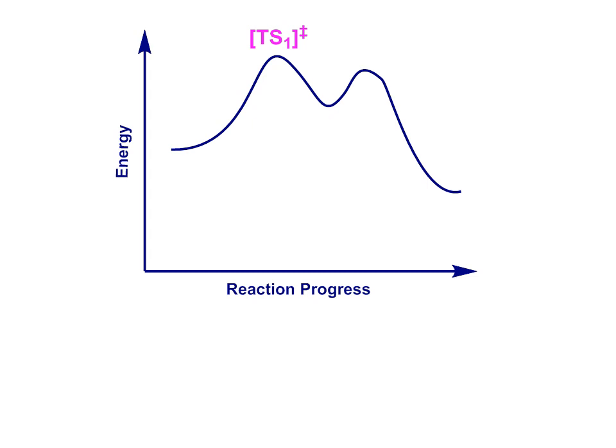Hammond proposed that if two species are directly linked in a reaction profile and are close in energy, then they will also be similar in structure. This means that we can get a reasonable idea for the structure of a transition state by looking at the reactant, product, or intermediate on either side of it in the energy profile that it is closest to in energy.